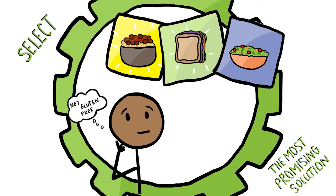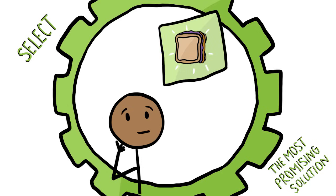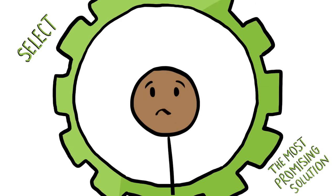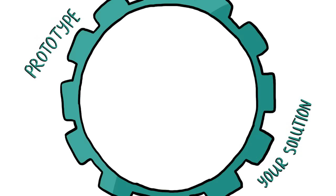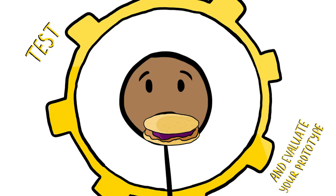You weigh your options and determine making something at home will be cheaper and faster than ordering online. You decide everyone likes PB&J, but you don't have gluten-free bread — you do have corn tortillas. So you try PB&J on corn tortillas and make a prototype.